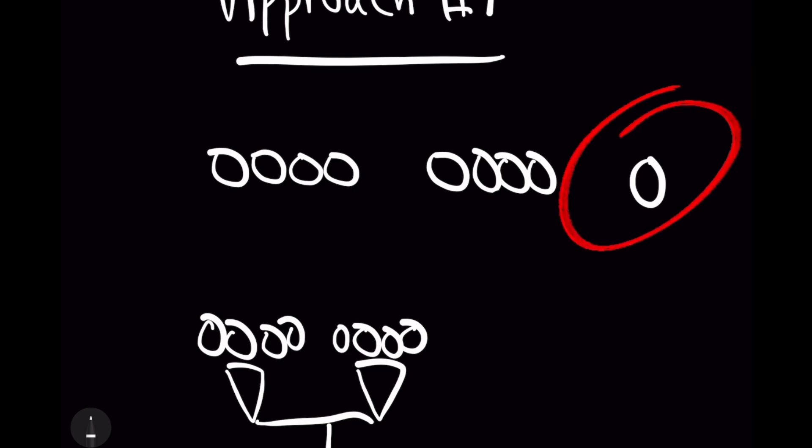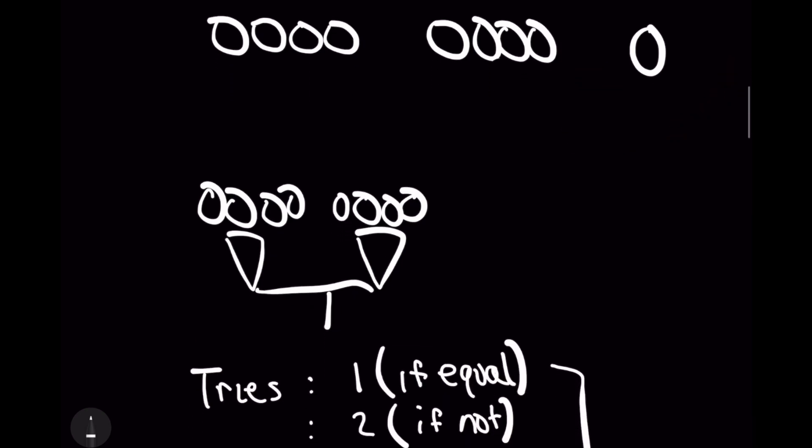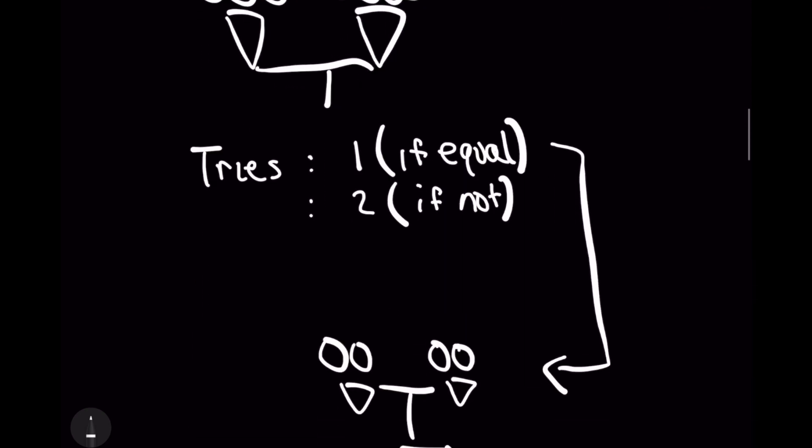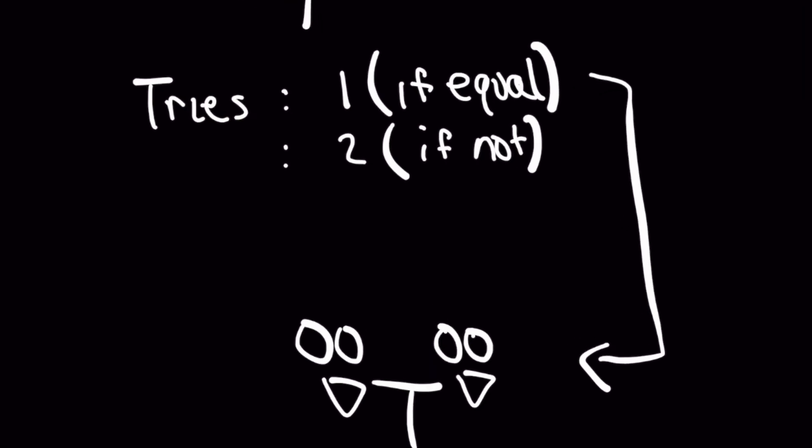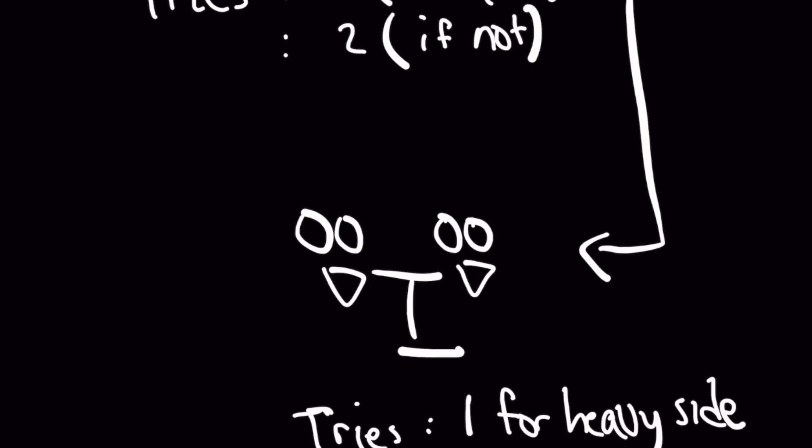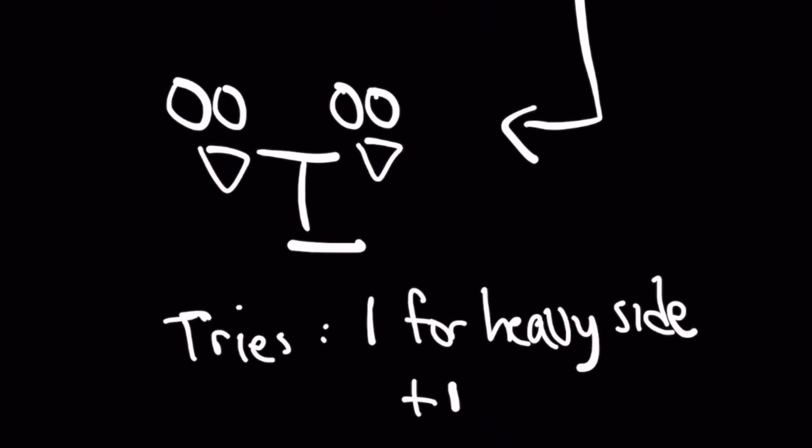Otherwise, we'll take the heavier side, and we'll dice the experiment up in such a way where now we have two and two being compared. So then, when you take this measurement, you either have the case that they're equal, or if they're not equal, we take the heavier side, and we finally compare the two pennies. Now, this isn't a bad approach.